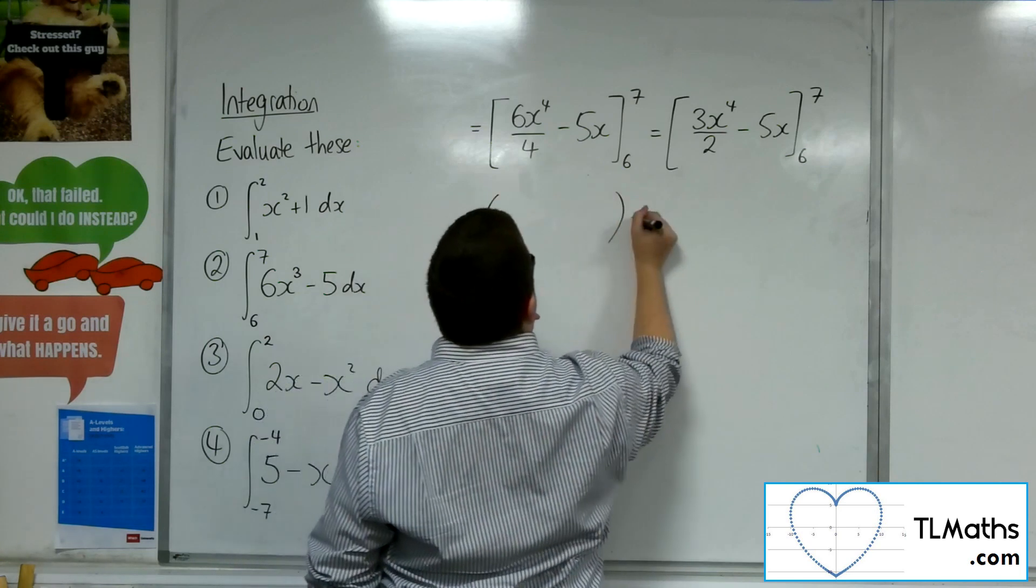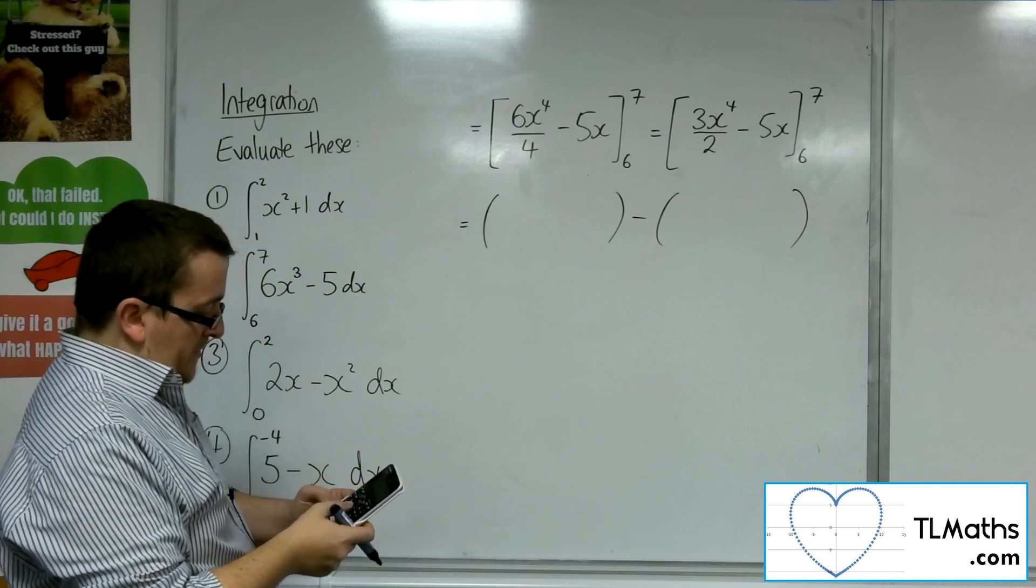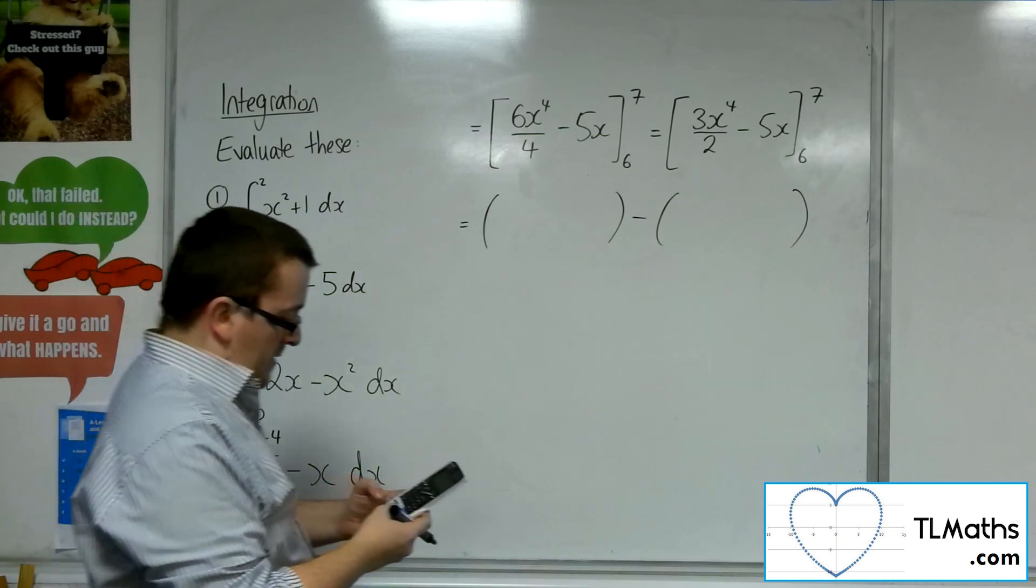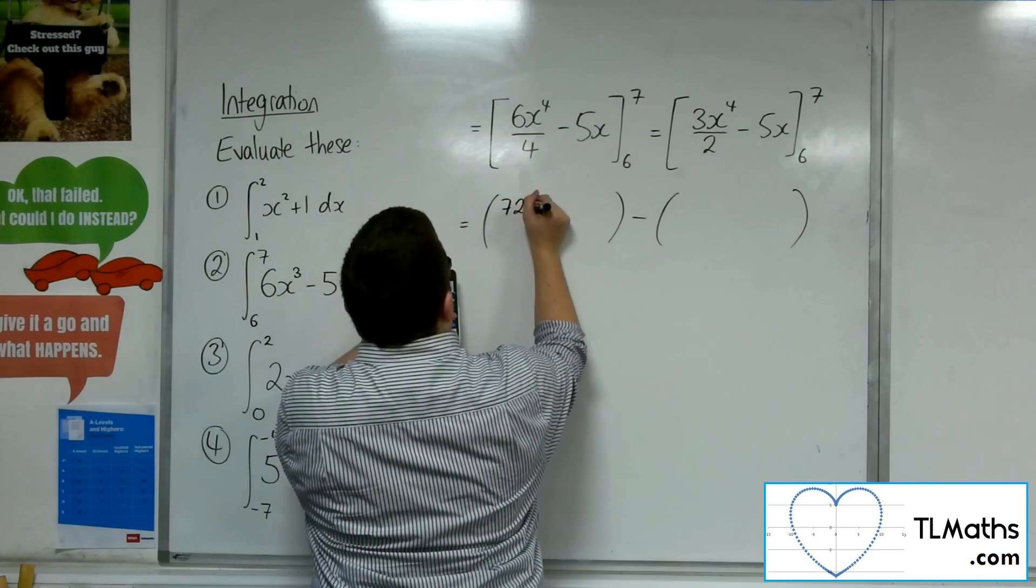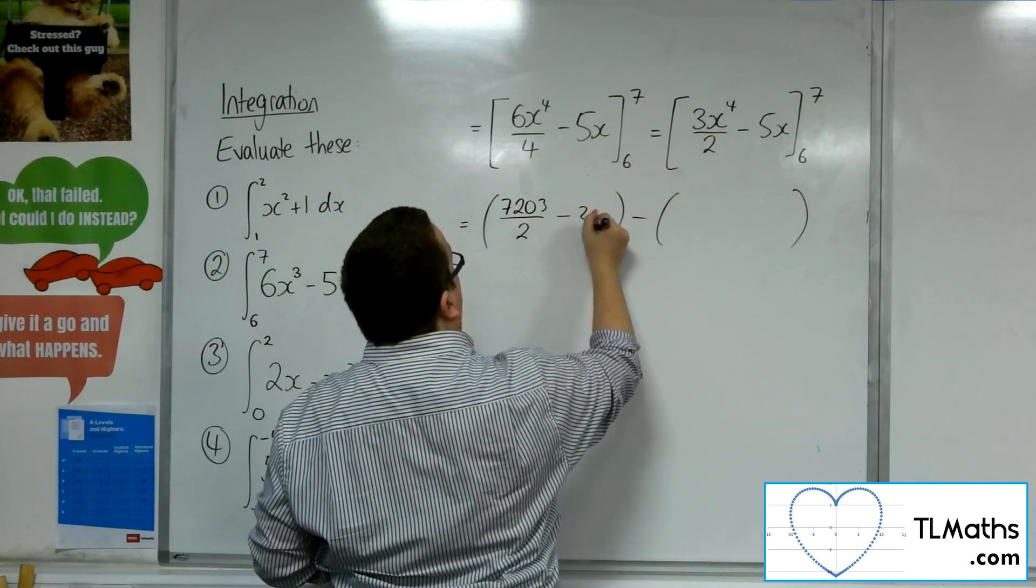Open up brackets. So we're going to substitute in the 7 first. So 3 times 7 to the power of 4 divided by 2 is 7,203 over 2, take away 5 lots of 7, so take away 35.